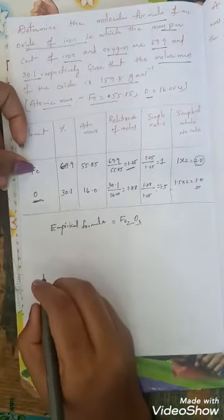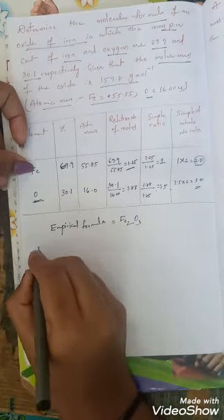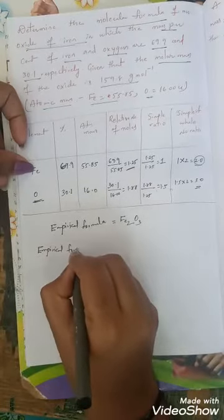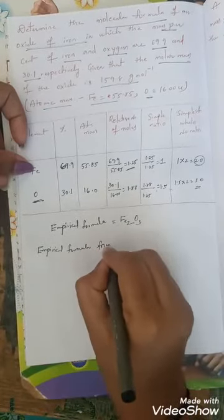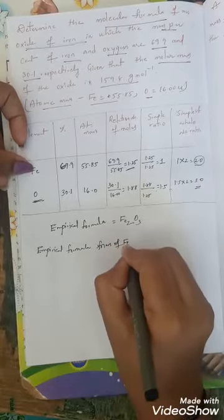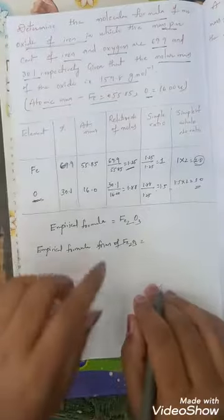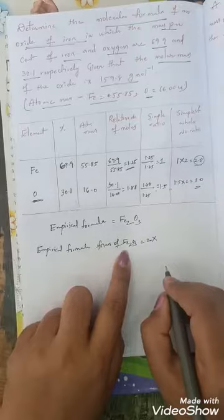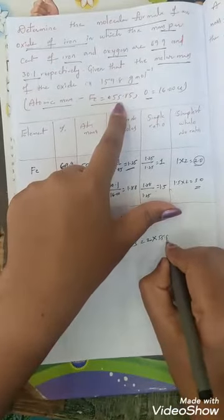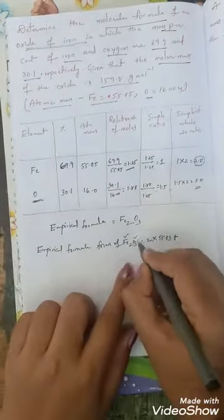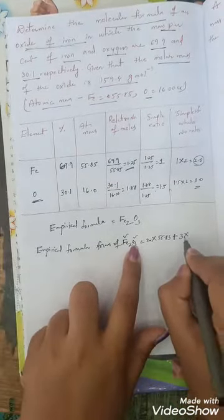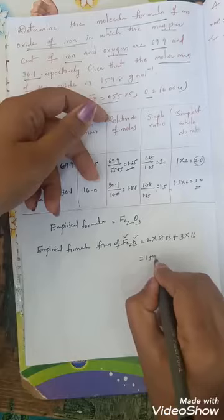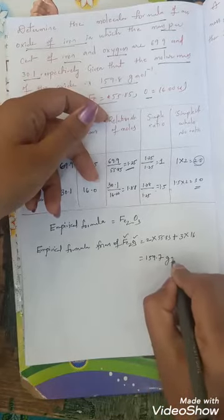Now to get the molecular formula, first find out the empirical formula mass. Empirical formula mass of Fe2O3 is equal to its atomic masses. There are 2 irons: 2 into atomic mass 55.85. Plus oxygen: 3 into atomic mass 16. By calculating all this you will get 159.7 gram per mole. This is the empirical formula mass of iron oxide.